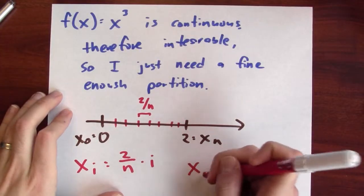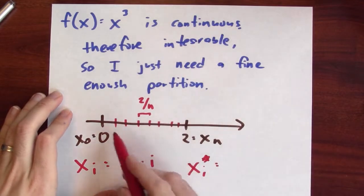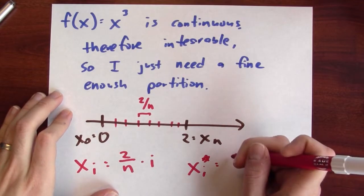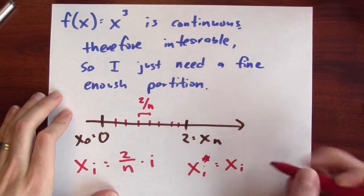Now, how should I choose my sample points? I'm just going to choose my sample points, x sub i star, to be the right-hand endpoints. So they'll be, in fact, the same as x sub i. Now, I just have to write down the Riemann sum for this particular equal size partition and our chosen sample points.